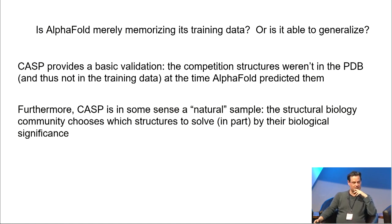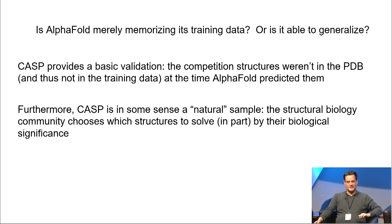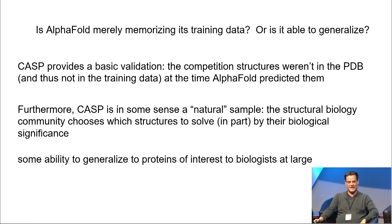It's actually sort of slightly stronger than merely good. CASP is in some sense a natural sample. After all, the structural biology community isn't choosing which structures to solve for CASP. They're choosing them because... Well, in part, because they're biologically significant. They also choose them in part because they're tractable, which is not quite the same thing. So in some sense, at least, it has an ability to generalize to proteins of interest to biologists at large. It's kind of a basic sanity check.